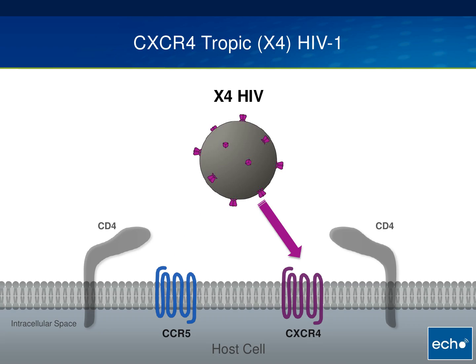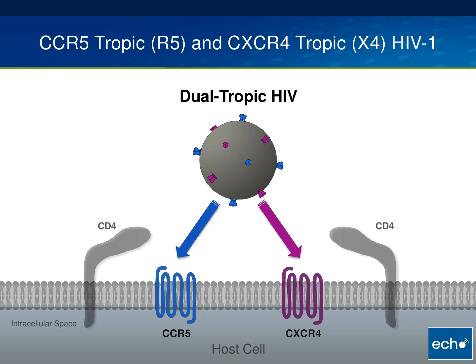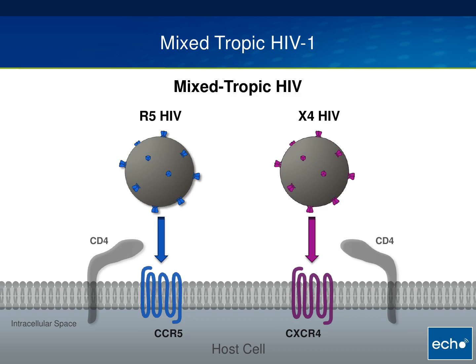Think of R5 conceptually as a right-handed virus. If you have CXCR4 tropic virus, or X4 virus, this is a virus that goes through the CXCR4 receptor — think of this as a left-handed virus. You can also have virus that enters either receptor, going through either CCR5 or CXCR4. These are called dual tropic HIV — conceptually an ambidextrous virus. Last, you can have a mixture of R5 and X4 virus, which we call mixed tropic.